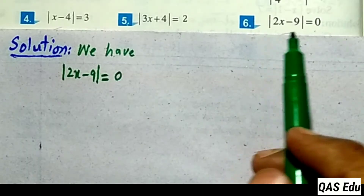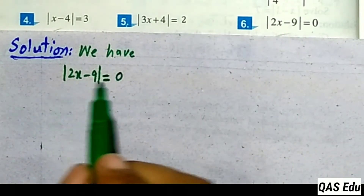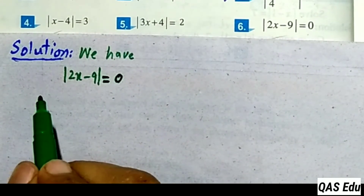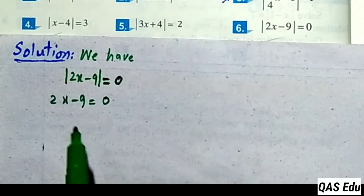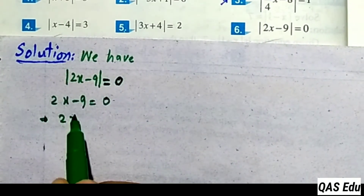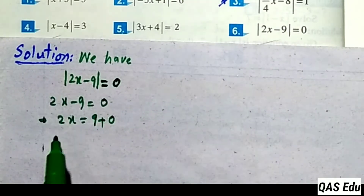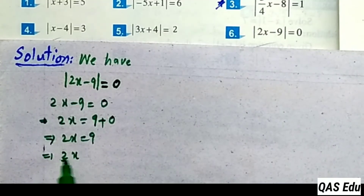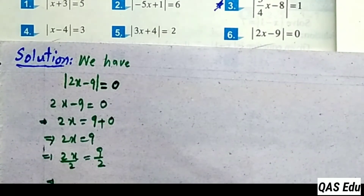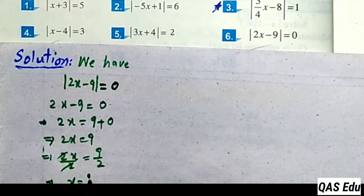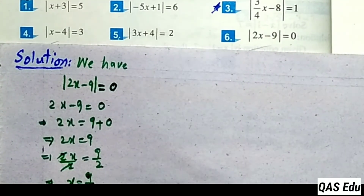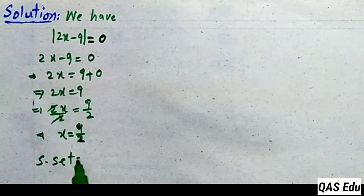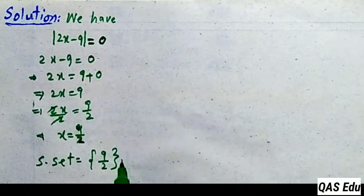Question 6: absolute value of 2x minus 9 is equal to 0. When the absolute value equals zero, there is only one possibility — we cannot take plus or minus. So 2x minus 9 equals 0. Move minus 9 to the right as plus 9. Then divide by 2: x equals 9 over 2. The solution set has only one value: 9 over 2.